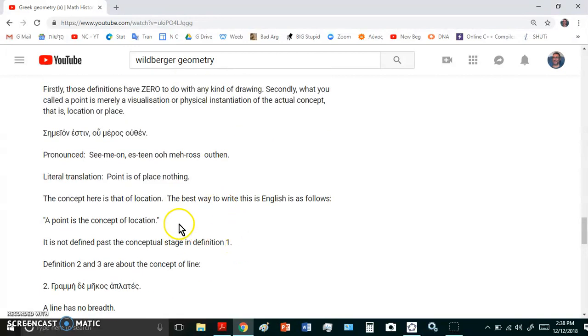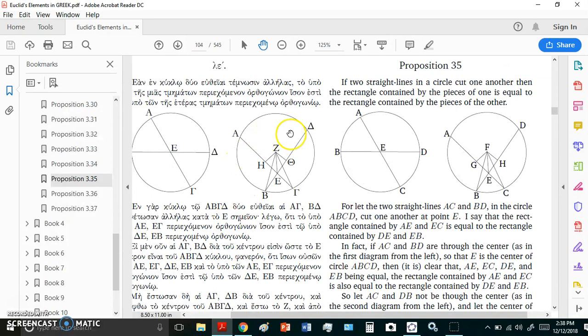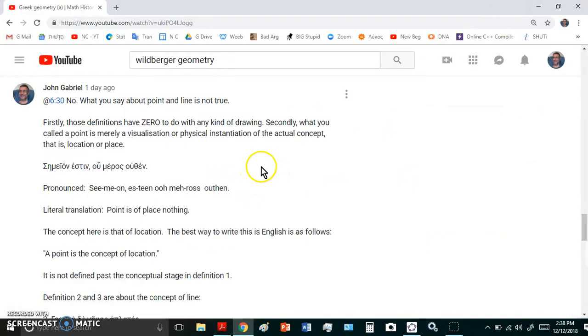Now I know that Euclid and the ancient Greeks understood these things correctly. And if you download my free book, which you can get on the single variable calculus, you will see in chapter 4 that I derive all these concepts correctly without any vagueness or circularity or self-reference. And chapter 4 has all that information. Unfortunately, Euclid didn't succeed in writing these things down perfectly.